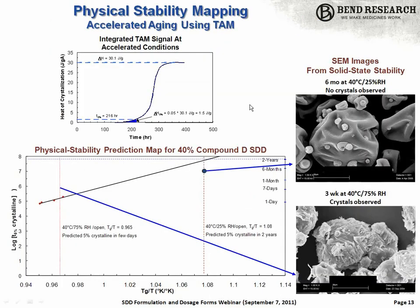This is what I refer to as getting a more quantitative understanding of the kinetics of crystallization, particularly when you have a dispersion that's close to a potential edge of failure at a storage condition of interest. This is the use of thermal activity monitoring — TAM — also called isothermal calorimetry.